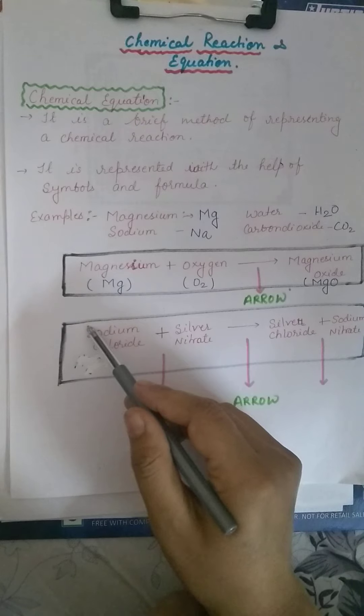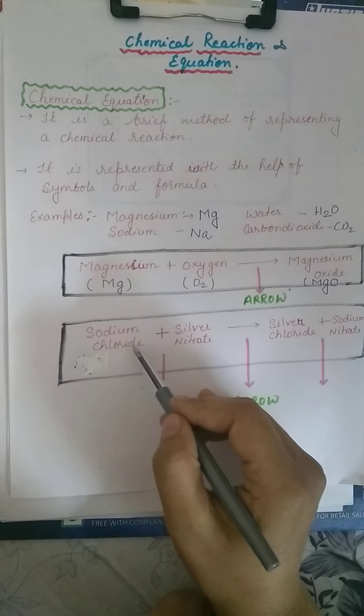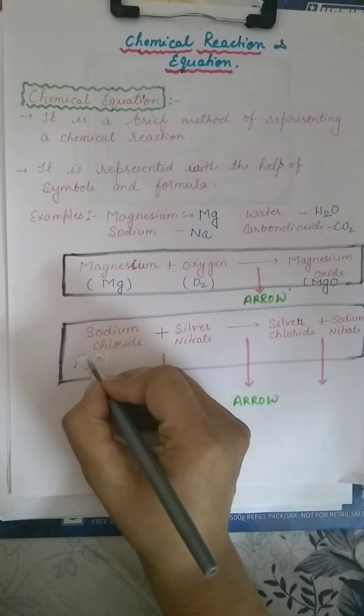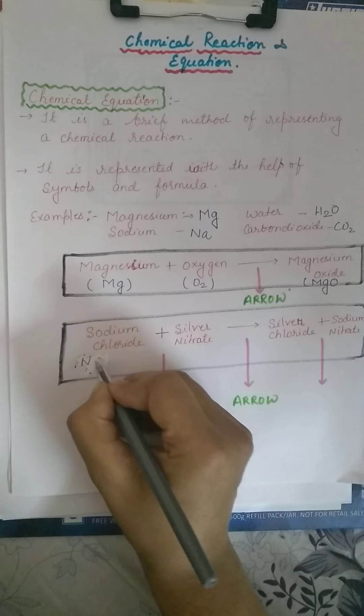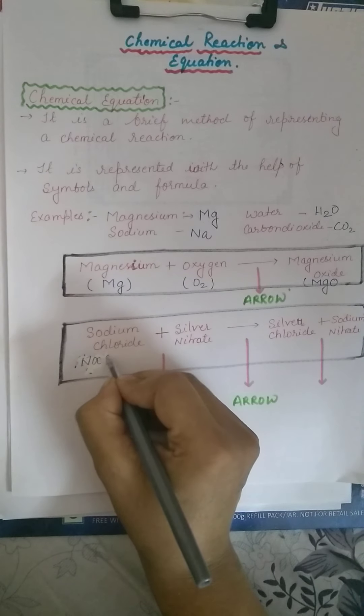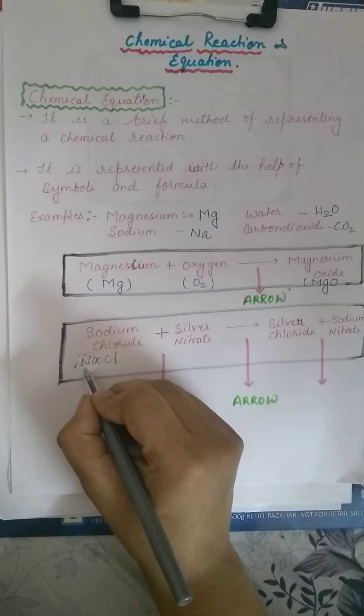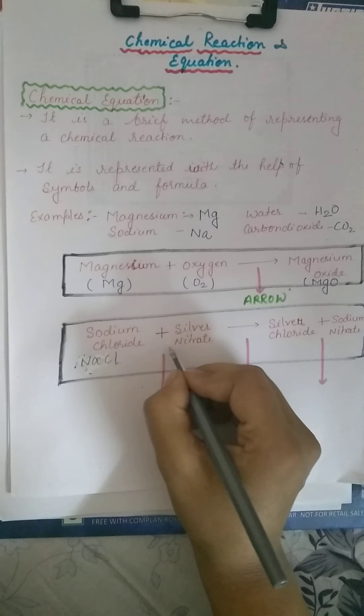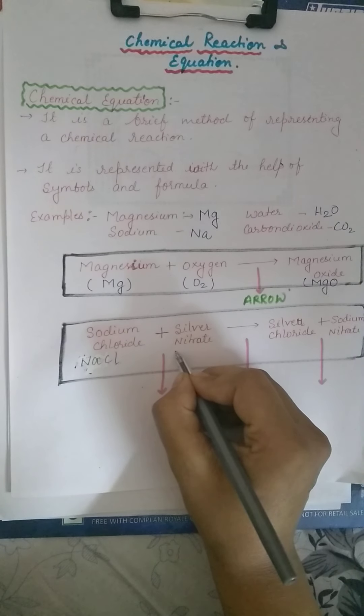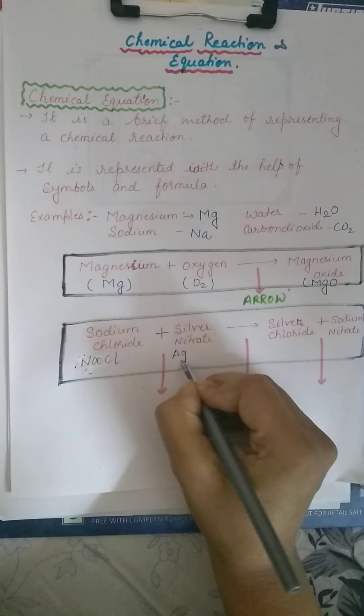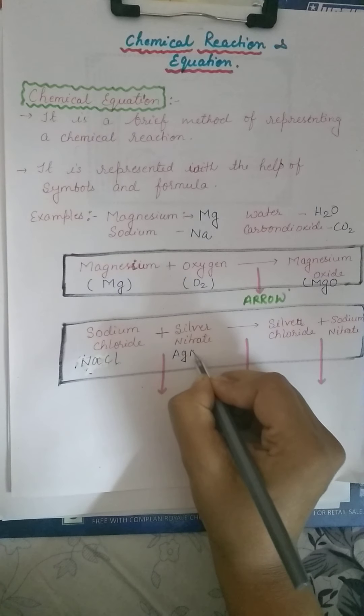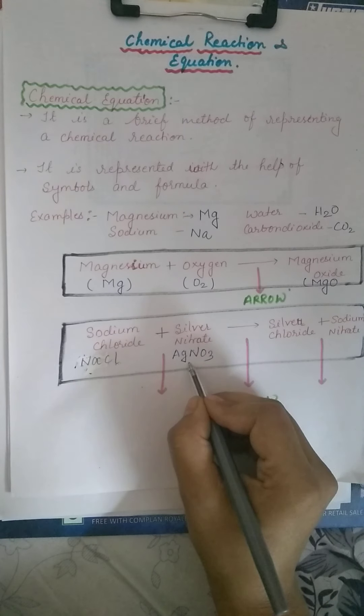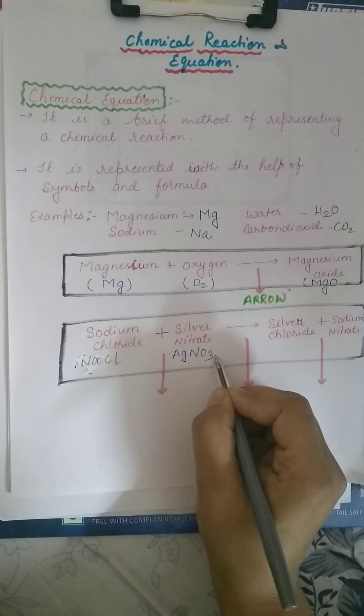Let's take a second example. Here, sodium chloride. What is sodium chloride? Sodium is NaCl. Symbol of sodium is NaCl and chloride is Cl. Silver nitrate means Ag, NO3. The formula is Ag - Ag is silver and NO3 is nitrate.